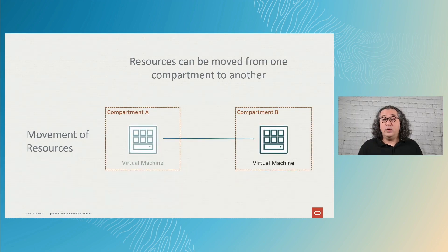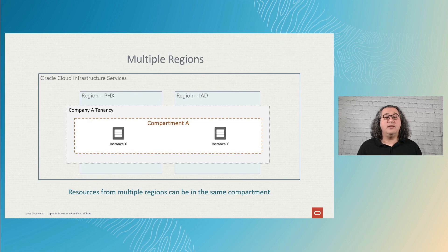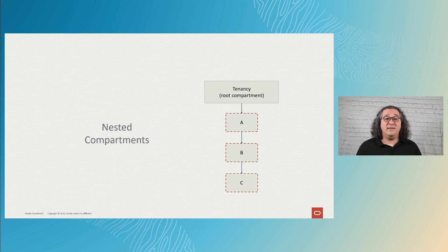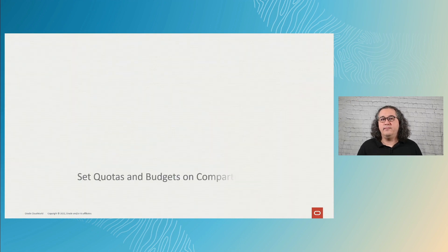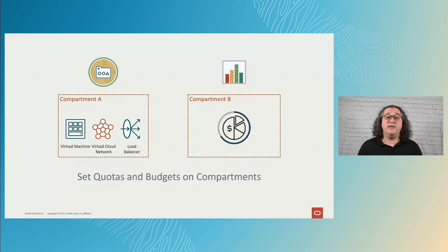Resources can be placed in one compartment, but you can move a resource to another compartment if needed. Compartments are global resources spanning all regions — your tenancy is your root compartment and it contains all resources in all regions. Compartments can be nested up to six levels, granting you flexibility in how you organize your resources. Compartments can also be used to set quota policies that define the number of resources in that compartment, and you can also create budgets that will show how much the resources represent in your bill.